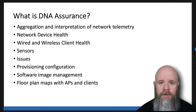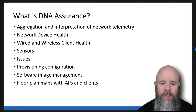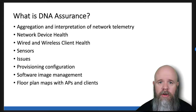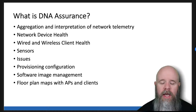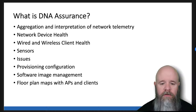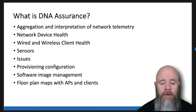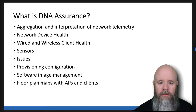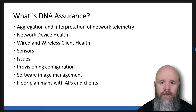DNA Assurance is basically the aggregation and interpretation of network telemetry - the health of your network devices and client devices in your network. It takes all that information and scores it. Each network device will have a score from one to ten, and each connected client will have a score from one to ten. That score is derived by a number of factors depending on what type of client or device it is. Generally, higher is better, and you'll see red, amber, and green associated with the score.